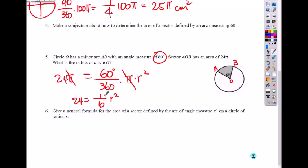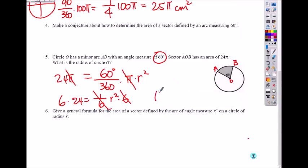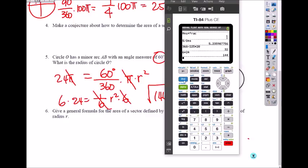Pi, we got rid of that already. So then what do you do? To get rid of one-sixth, you multiply by 6 on both sides. So you get 6 times 24 is 144. So 144 equals r squared. So you square root on both sides to get 12.